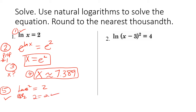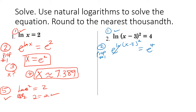Let's take it up a notch. We have natural log of (x minus three) squared equals four. Step one: the natural log is already isolated. Step two: using property number one, we write e to the natural log of (x minus three) squared equals e to the fourth. This undoes the natural log, leaving us with (x minus three) squared equals e to the fourth.